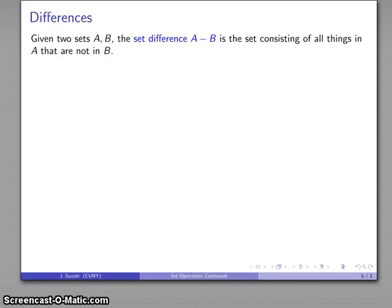Now, the complement is tied in with another set operation known as the set difference. Given two sets A and B, I can find the set difference. That's going to be defined as the set consisting of everything that's in the set A, except for those things that are also in the set B.